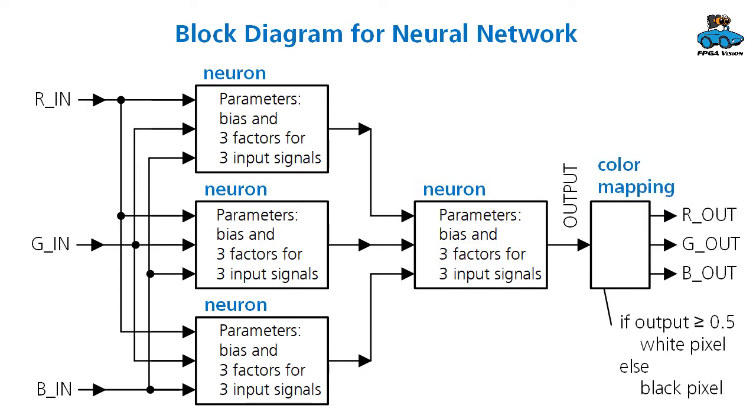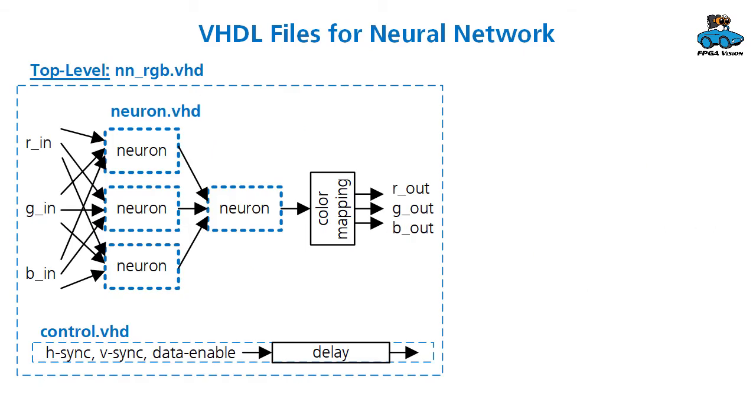We have output processing. The output of the neural network is a value between zero and one, and we're doing color mapping. If the output value is 0.5 or larger, we indicate this with a white pixel. In other cases, we have a black pixel at the output. The output image shows us the mapping of the color.